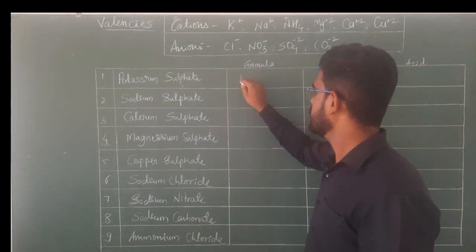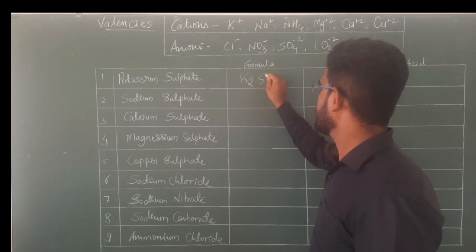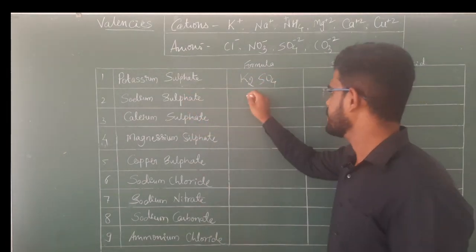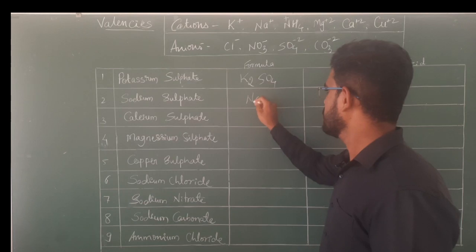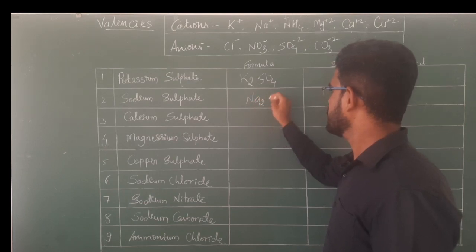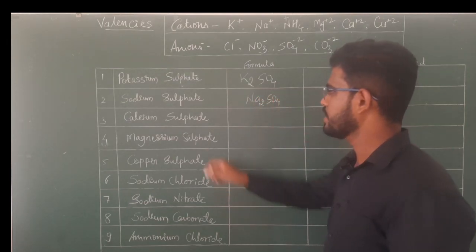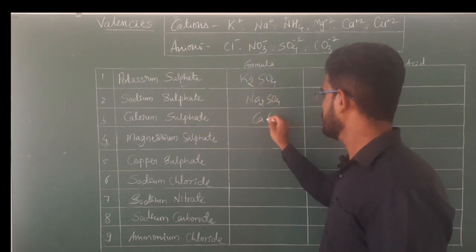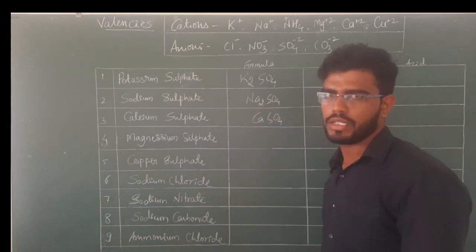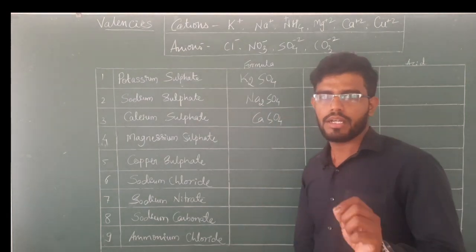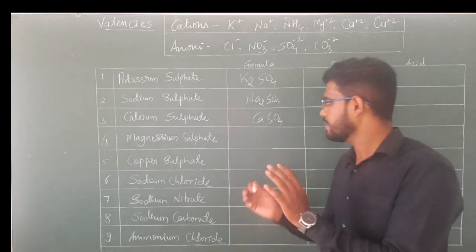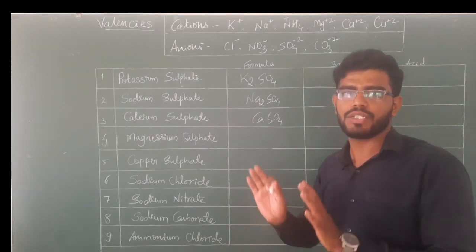Potassium sulfate is K₂SO₄. Next, sodium sulfate is Na₂SO₄. Calcium sulfate is CaSO₄. I am sure you know these things — hopefully you have watched that video or you understand how to write these formulas. Only then should you continue.